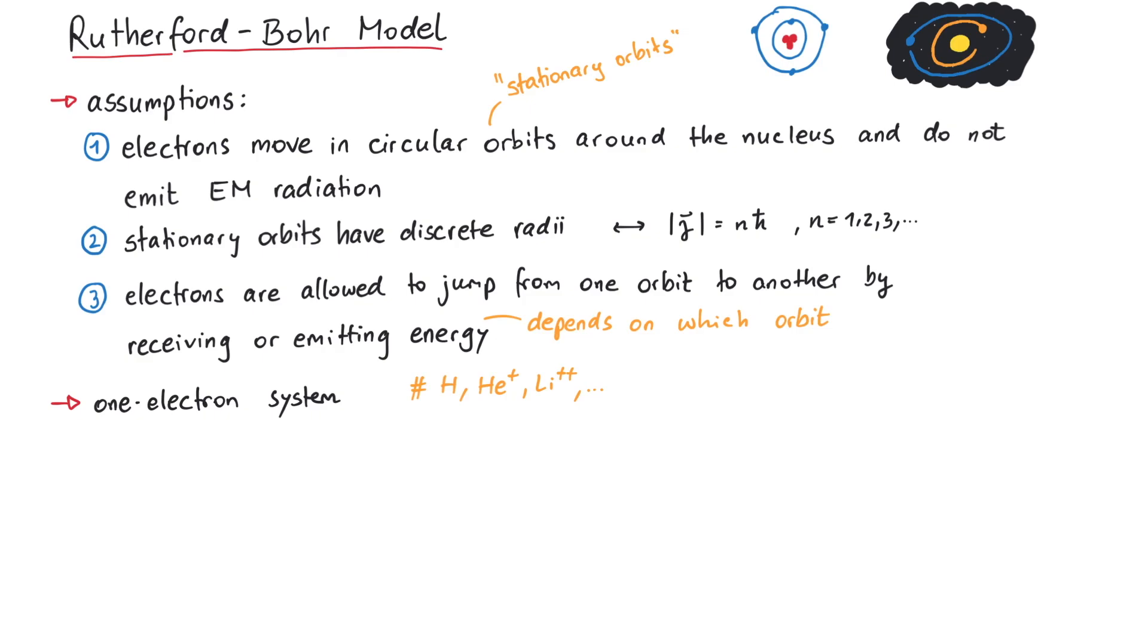The electron on its circular orbit is bound to the nucleus via the Coulomb force, such that the centripetal force and the Coulomb force balance each other. In this equation, mu stands for the reduced mass of the electron-nucleon system, and z tells us how many protons are in the nucleus, since this determines how strong the nucleus pulls the electron towards it. We can rearrange this equation to give us the radius of the electron orbit depending on its velocity.